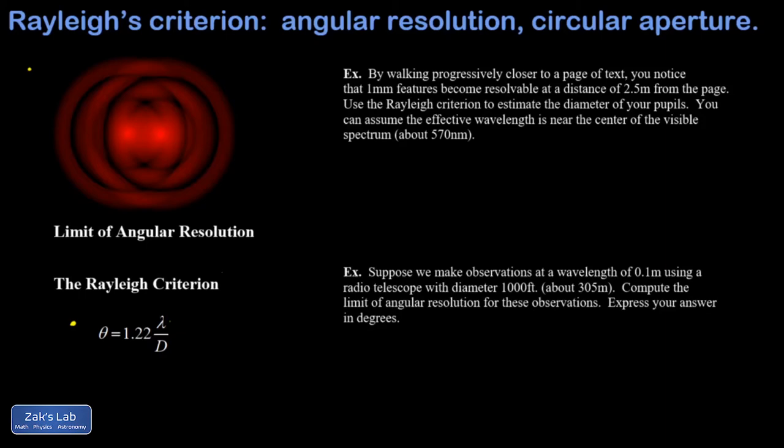This happens because larger wavelengths of light have diffraction patterns that spread out farther than smaller wavelengths of light. In addition, a larger value of D would give you a smaller minimum resolvable angle, in other words better angular resolution.